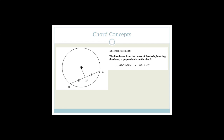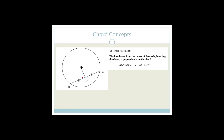The first theorem statement says: a line drawn from the center of the circle to bisect the chord is perpendicular to that chord. So that is the theorem statement, and chances are you will be given a circle with a diagram and they'll say prove it. I'm going to go through the proof with you now.